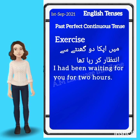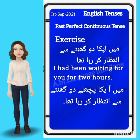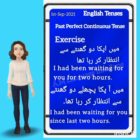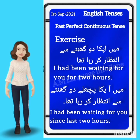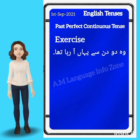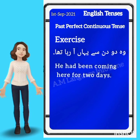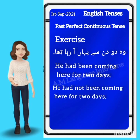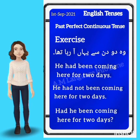Practice sentences with 'for': 'I had been waiting for you for two hours.' Another example: 'He had not been coming here for two days.' Interrogative: 'Had he been coming here for two days?'